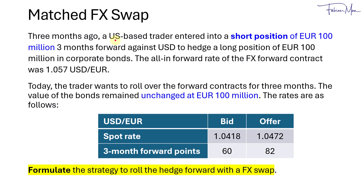In this video, we'll walk through an example on Match FX Swap. Three months ago, a US-based trader entered a short position of 100 million euros in a three-month forward contract against US dollar. This was done to hedge their long position of 100 million euros in corporate bonds. At the time, the all-in forward rate was 1.057 US dollar per euro.